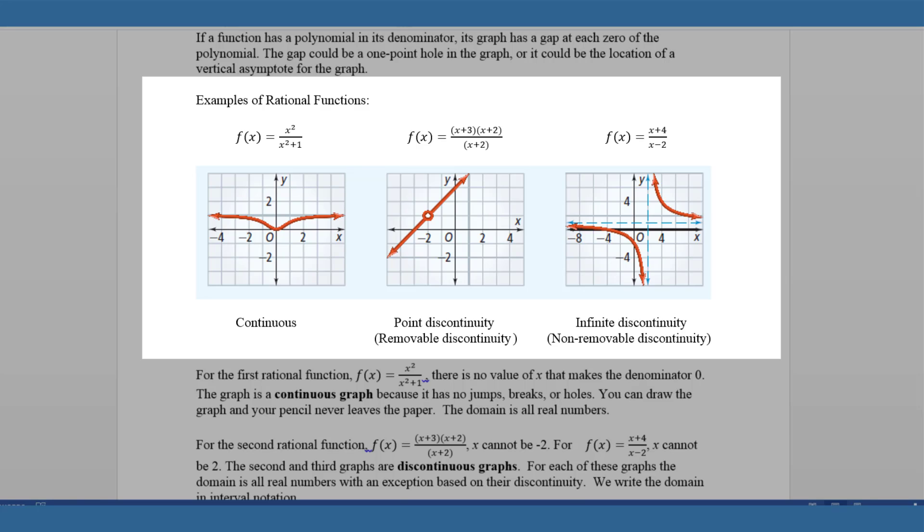On the second one, the middle function here, you can see that the x plus twos on both the top and the bottom can cancel out. When this happens, this is what we call removable discontinuity. Anytime you have a removable discontinuity or point discontinuity, it creates a hole in the graph. So if you have a factor that is canceled out, you know that there's going to be a hole in the graph. Domain is all real numbers except for the value of that hole, in this case is negative two.